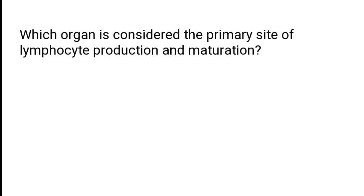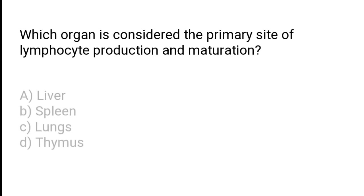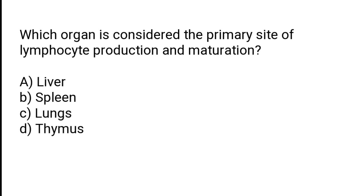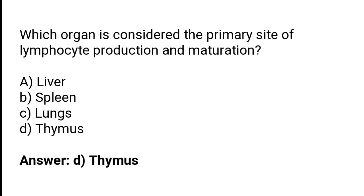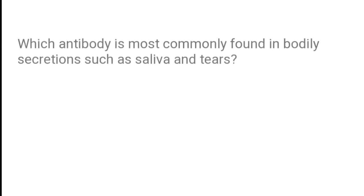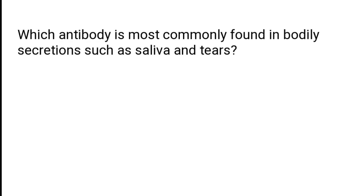Which organ is considered the primary site of lymphocyte production and maturation? Liver, spleen, lungs, or thymus? The correct answer is option D — the thymus is considered the primary site of lymphocyte production and maturation.